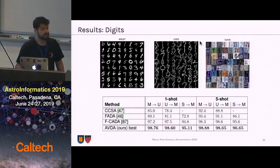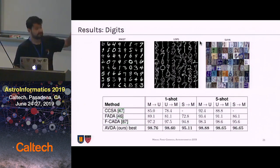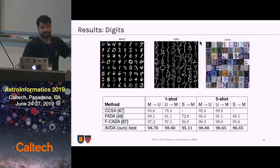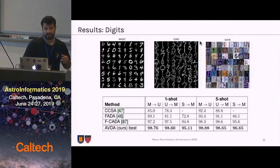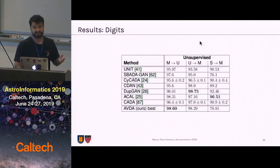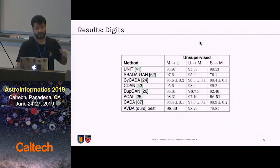We test our model on the Digit benchmark, which is one of the most used benchmarks for this kind of task, containing images from MNIST, USPS, and SVHN. We perform three tasks: MNIST to USPS, USPS to MNIST, and SVHN to MNIST, using one and five labels per class, which we denote one-shot and five-shot. We show that using our method, we outperform all previous state of the art by 0.3 to 1.5% of accuracy. We also test our model in an unsupervised fashion with no labels on target, achieving competitive results and even outperforming the state of the art on the MNIST to USPS task.